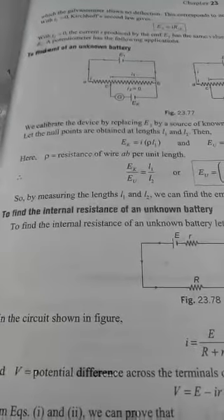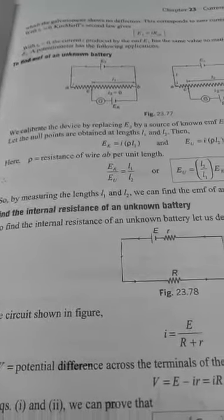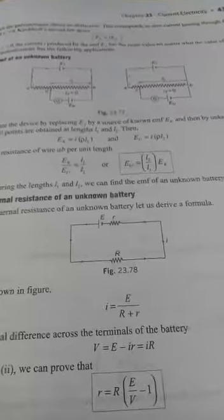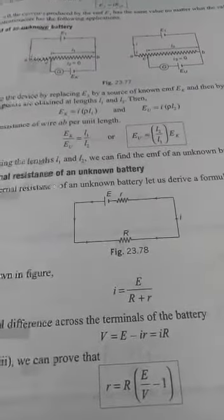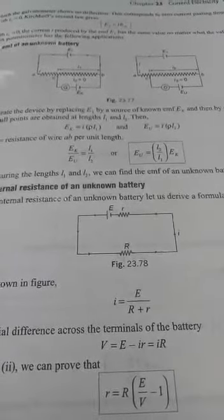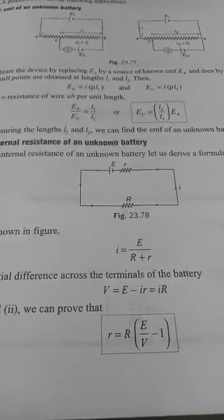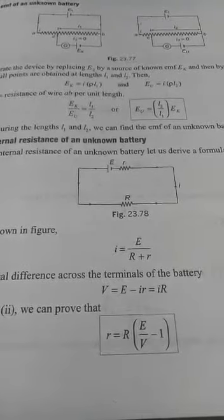Students, here we will be discussing the topic: how to find internal resistance of an unknown battery. If you look into the theory part, look at this circuit. The I value will be equal to total EMF by total resistance. So from there, if you rearrange, you get r is equal to R into E by V minus one.